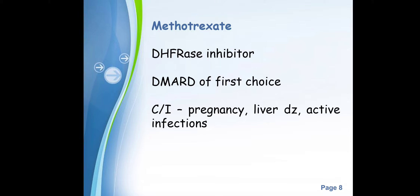The first drug is methotrexate — it is a dihydrofolate reductase (DHFR) inhibitor, which we also encounter in anti-cancer drugs. At present, methotrexate is the DMARD of first choice. It is mostly contraindicated in pregnancy, liver disease, and active infection, because methotrexate causes depression of immunity, increasing the chances of infection. There are also risks of methotrexate toxicity, for which leucovorin is used as treatment.